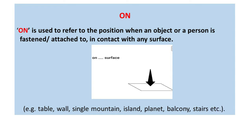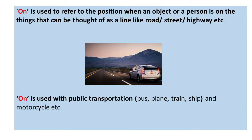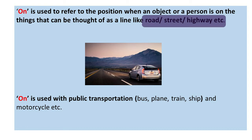You can see that the preposition 'on' is used to show the position somewhere on a surface. We also use the preposition 'on' to refer to the position when an object or a person is on things that can be thought of as a line, like road, street, highway, river, etc.